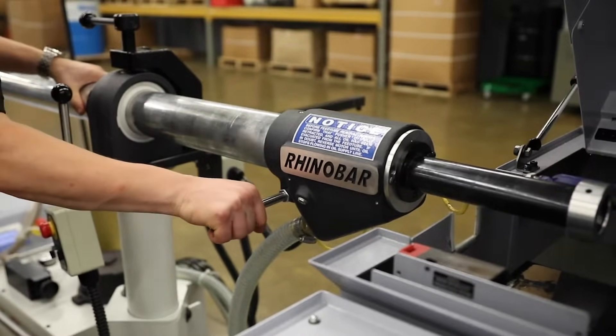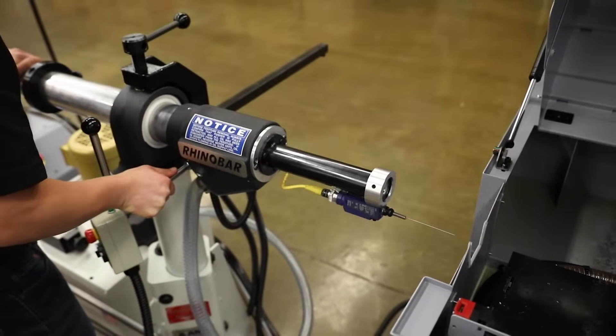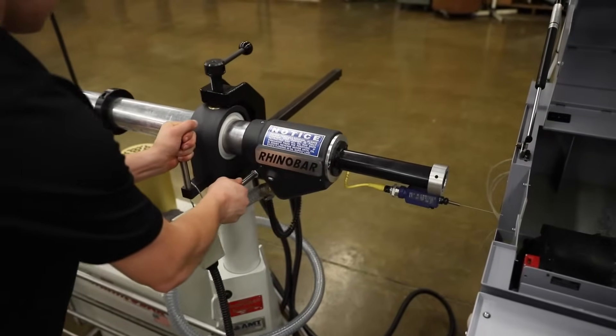Additionally, this bar feed utilizes other features, including Z-axis retraction. On moving headstock lathes, this is adjusted to minimize your remnant length.